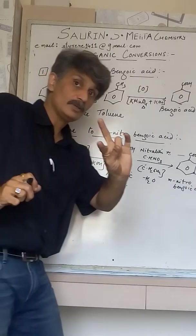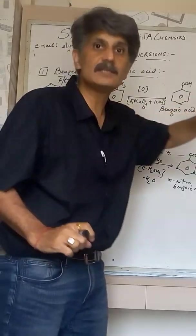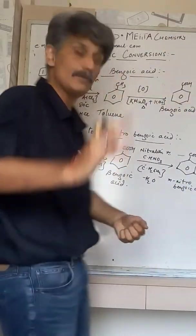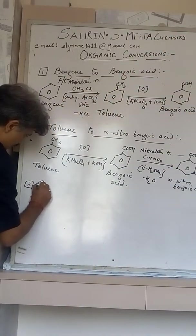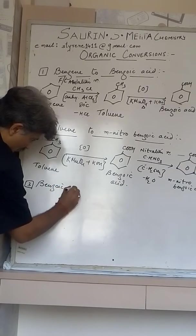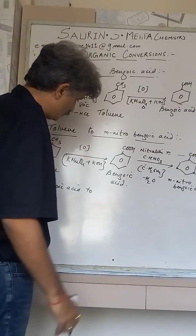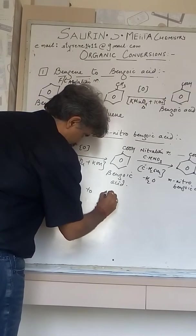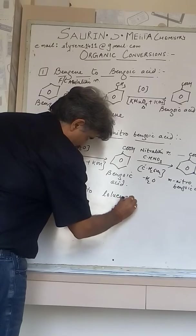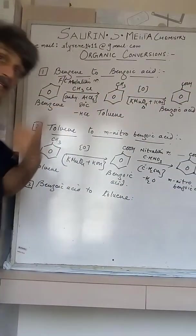Now one more I'll take where I'll be utilizing my own way and will be going in a sort of reverse phenomena. Yeah, the conversion is benzoic acid. When I now from benzoic acid I'll proceed further. See, I'll take benzoic acid to, I want to go to toluene. What you have seen, toluene to benzoic acid, now I'm taking reverse.